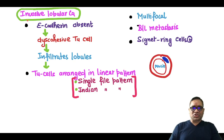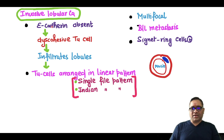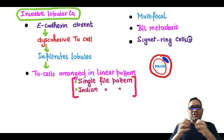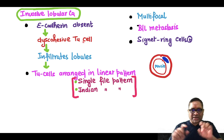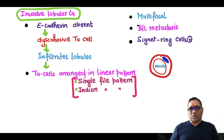Hello everyone. In this histo shorts I am going to tell you about invasive lobular carcinoma, which is a malignant breast tumor. They have a characteristic absence of E-cadherin protein. Because of this E-cadherin absence there will be no attachment between the tumor cells, so this will be a discohesive tumor — separate tumor cells that are going to infiltrate the collagenous stroma of the lobule.